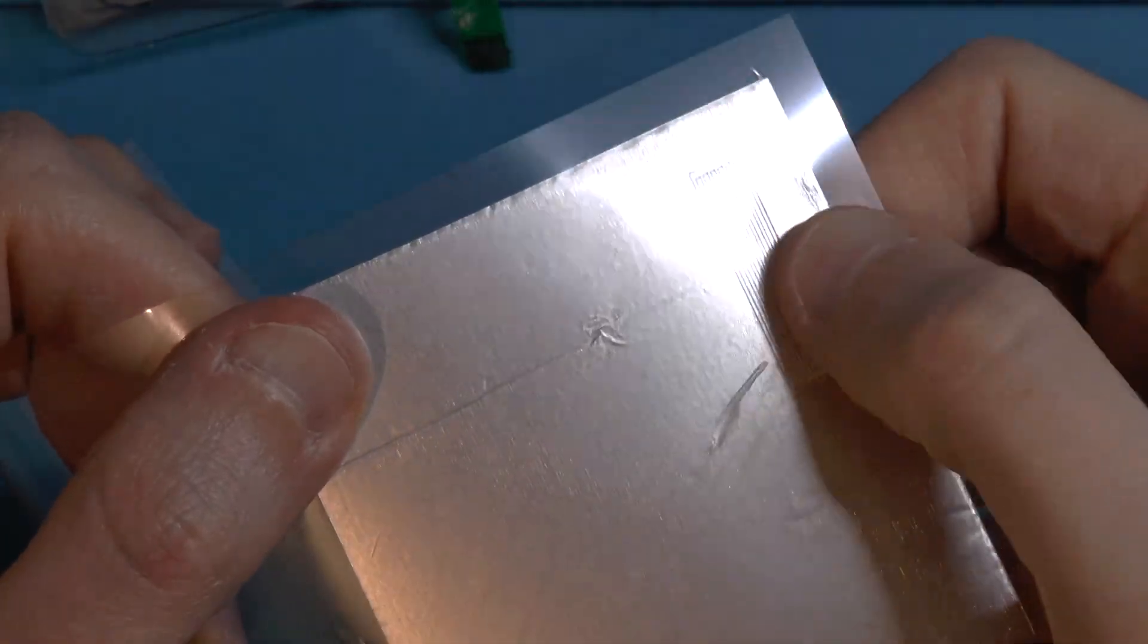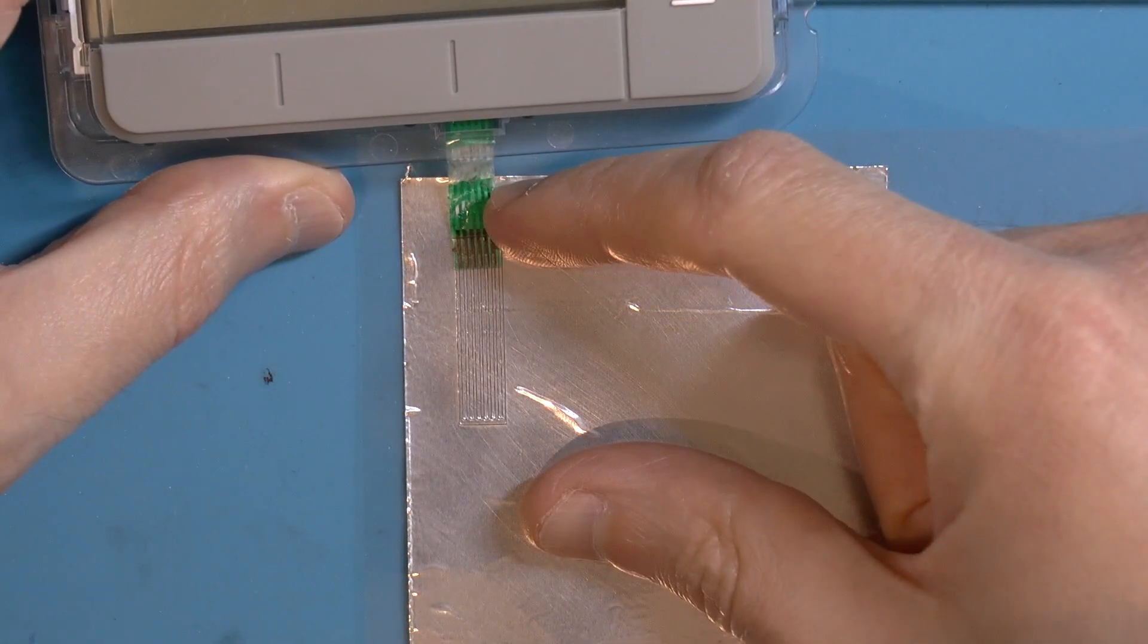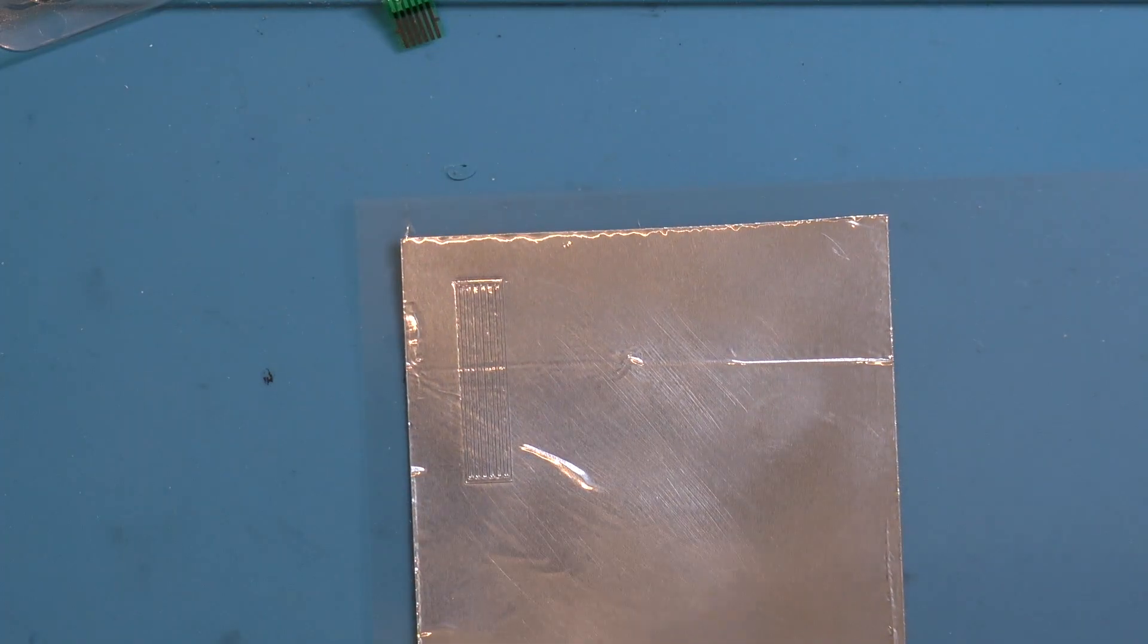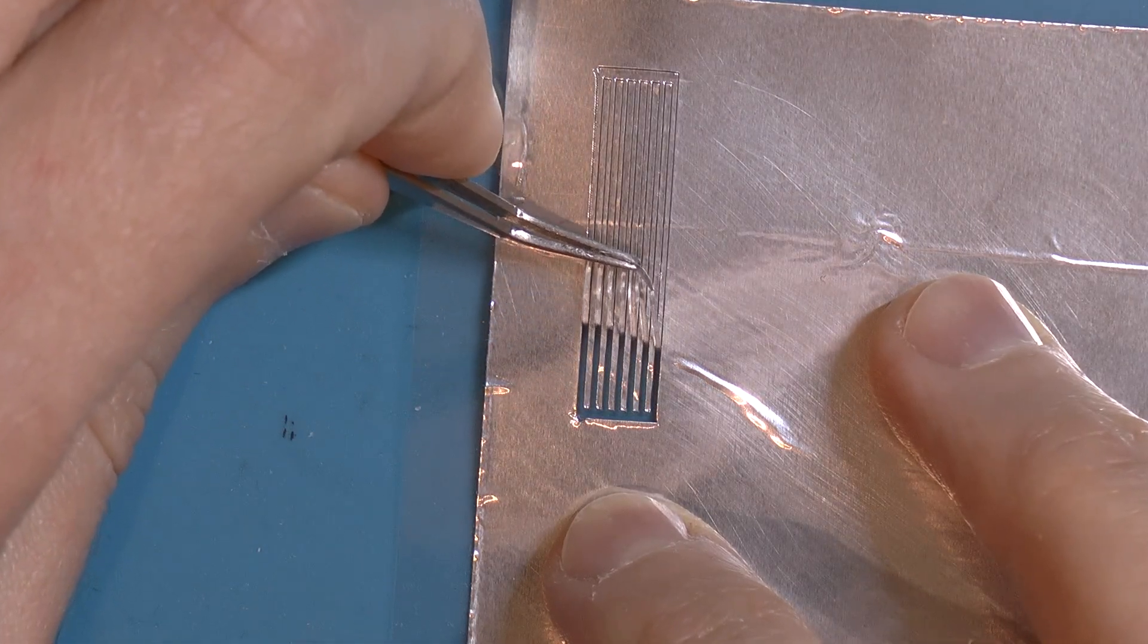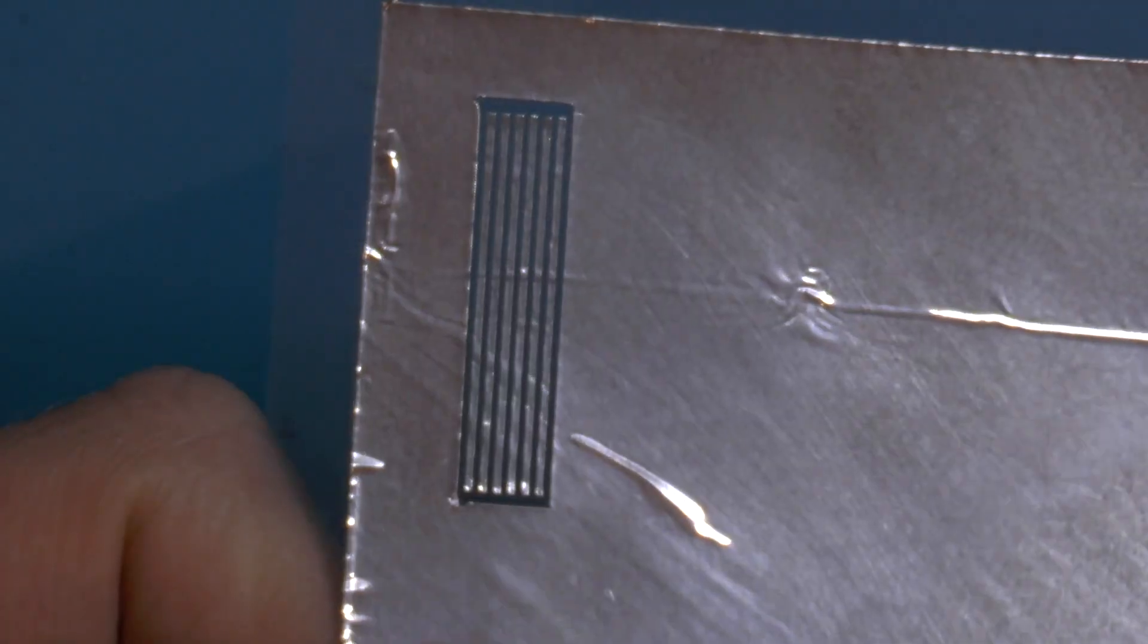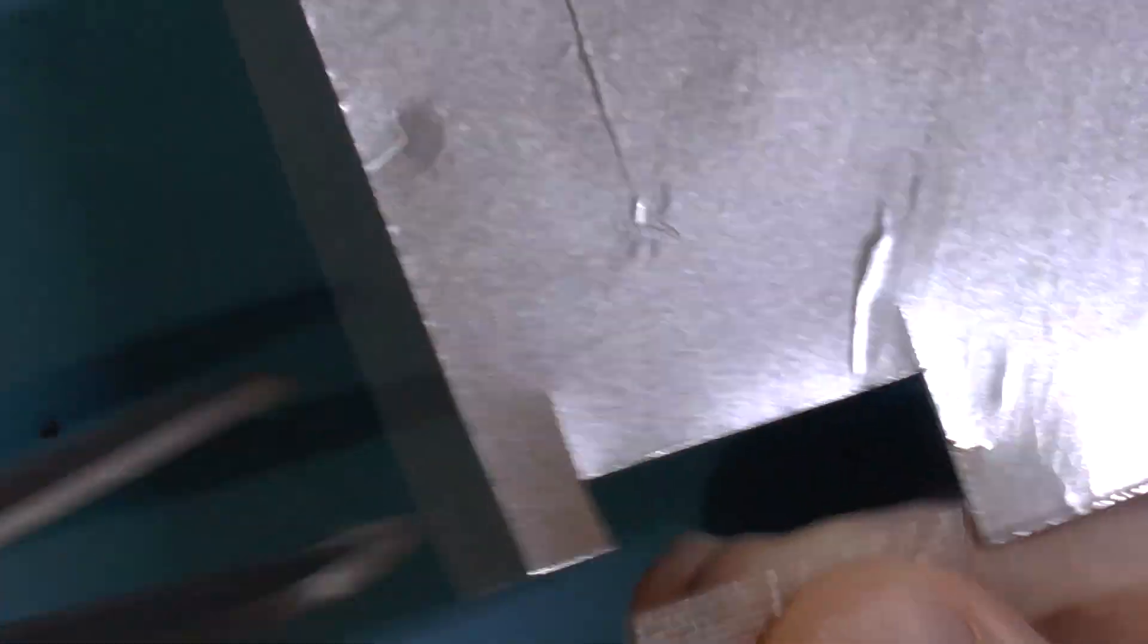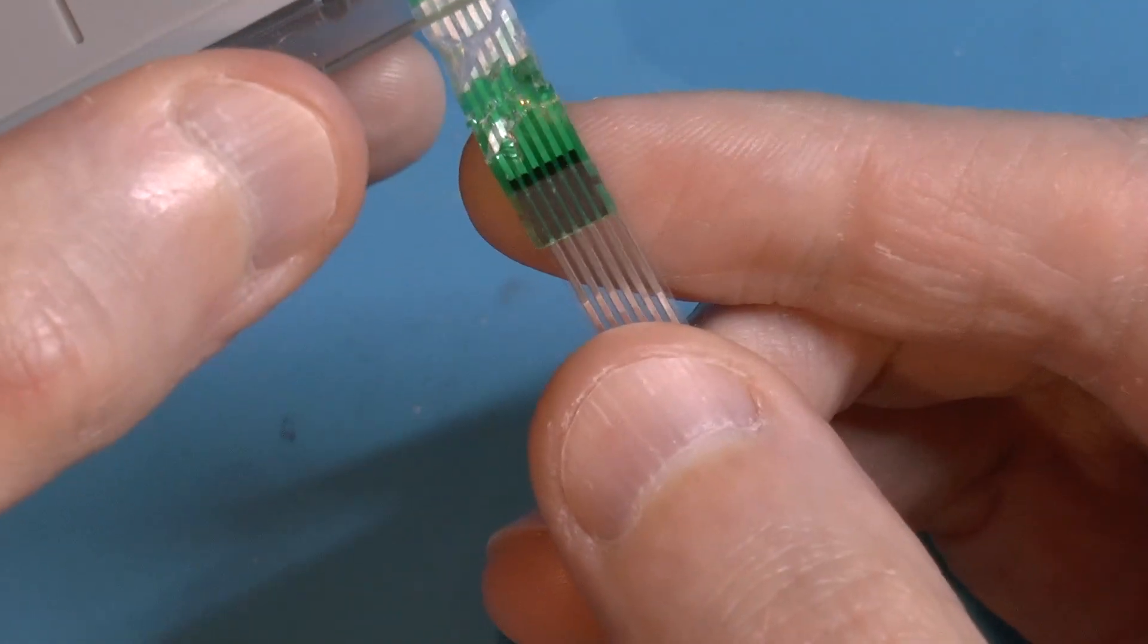Well it looks as though it's cut through the foil without cutting through the acetate which is exactly what I wanted and it also looks as though the pitch is correct for the traces. So now let's see if I can remove the material that I don't need. That is exactly what I wanted. Okay, one new ribbon cable which looks pretty good. So this is the conductive side.